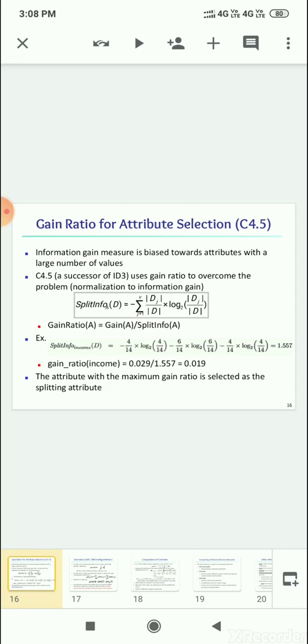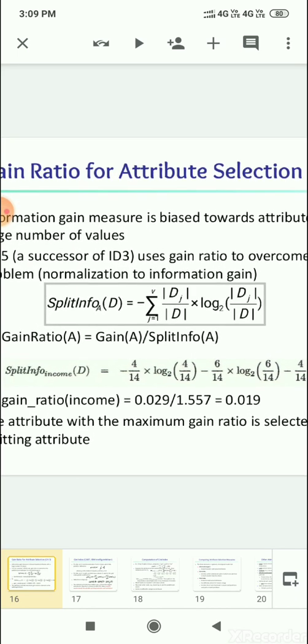Normalization to information gain. So the gain ratio can be calculated by the formula: gain ratio of A is equal to gain of A divided by split info of A. What is split info of A? It can be calculated by the formula for the attribute A, split info of D is equal to minus j equals 1 to v.